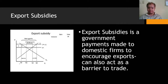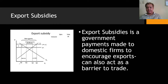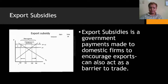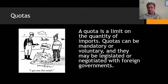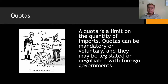Export subsidies are government payments made to domestic firms to encourage exports, and they can also act as trade barriers. A quota is a limit on the quantity of imports; quotas can be mandatory or voluntary and may be legislated or negotiated with foreign governments. For example, if we import items from abroad but only need a certain amount, that is the quota — you cannot exceed it, because exceeding the quota causes a surplus.